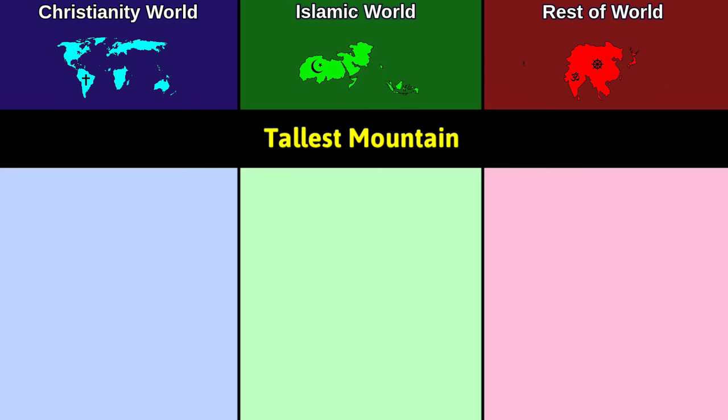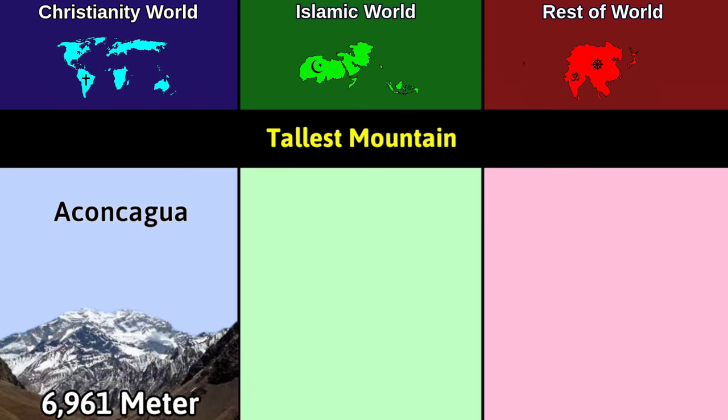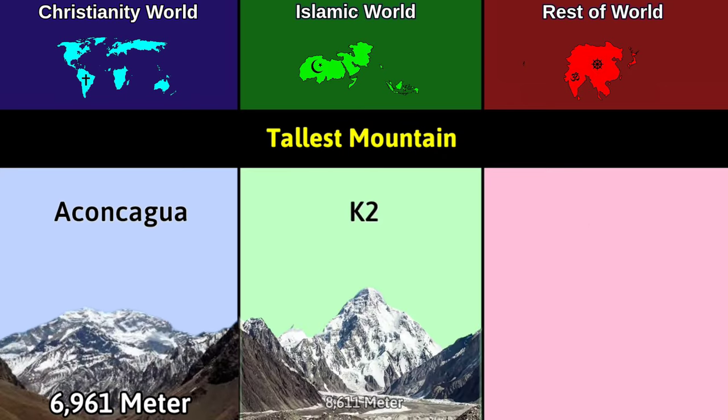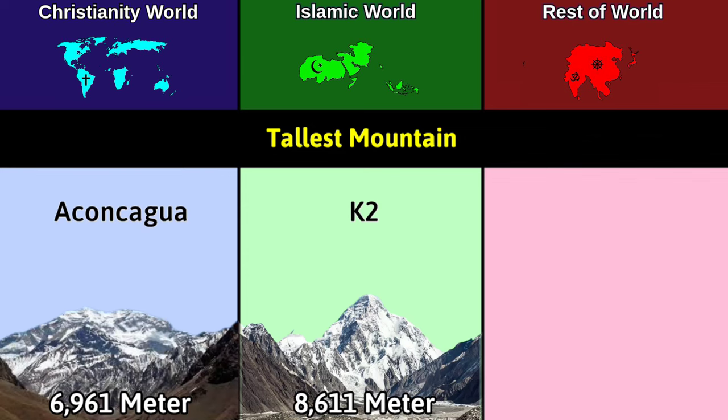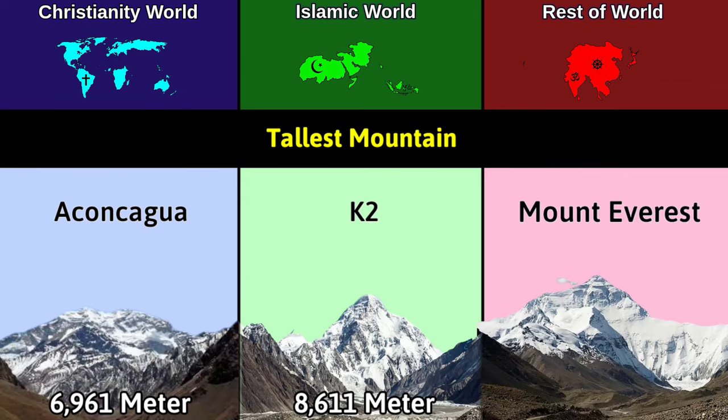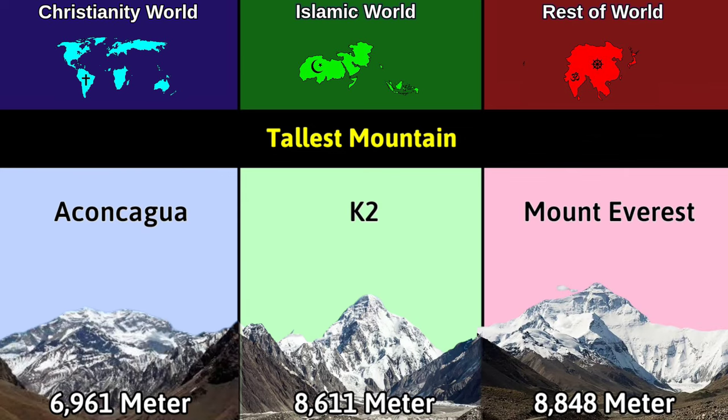Tallest mountain: Christianity — Aconcagua at 6,961 meters; Islam — K2 at 8,611 meters; Rest — Mount Everest at 8,848 meters.